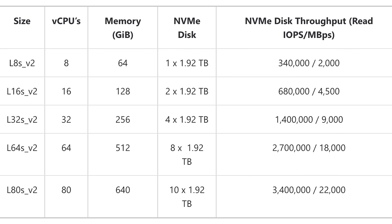The LSV2 series is well suited for high throughput and high IOPS workloads, including big data applications, SQL and NoSQL databases, data warehousing, and large transactional databases. Examples include Cassandra, MongoDB, Cloudera, and Redis. In general, applications that can benefit from large in-memory databases are a good fit for these VMs. You can provision them from 8 to 80 CPUs, 64 to 640 gigabytes of memory, and 1 to 10 1.92 terabyte NVMe disks. They can be pricey though, so make sure you take some care before spinning one up.